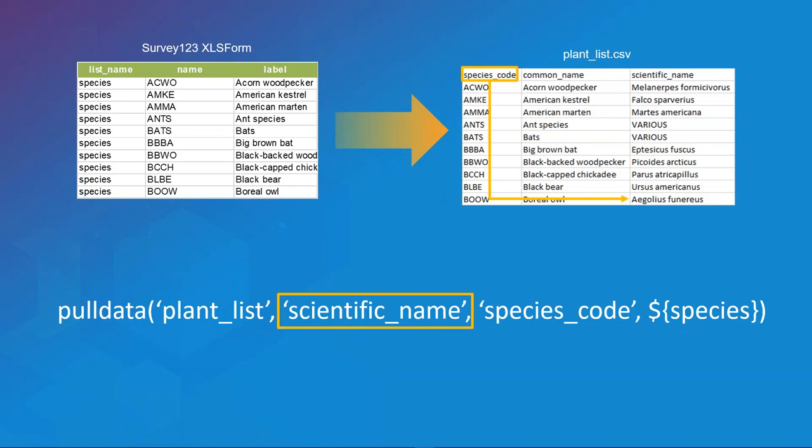This is particularly useful when you have a long list of choices like plants or species. To achieve this without an external CSV, the large species list would have to be copied multiple times in your XLS form with differing names, significantly slowing down performance and the speed at which the survey loads. It's important to note that the pull data function is available for both connected and disconnected use.